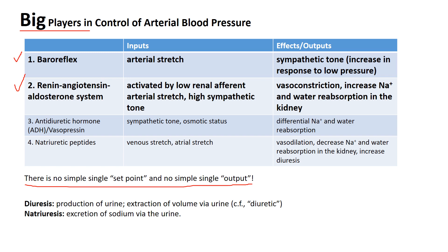The first one on this list is the autonomic baroreflex. Sensors in certain large arteries sense the stretching of the arteries. The outputs of the baroreflex system are the sympathetic and parasympathetic nervous outputs, which influence vascular tone, heart rate, and cardiac contractility. So there's a feedback loop from pressure, which changes the stretch in your arteries, and then sends a signal back to influence the pressure through influencing vascular tone and the heart.